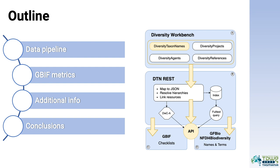We will first look at the data pipeline, whose four steps — A, B, C, and D — we will explain in detail in the next slides, and how the list was generated. We will then look at the metrics and see where additional information is available. Finally, we will summarize the key takeaways from this presentation.